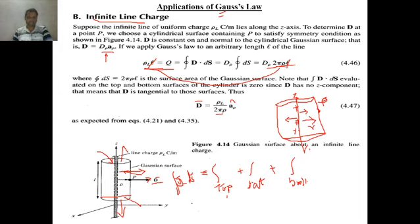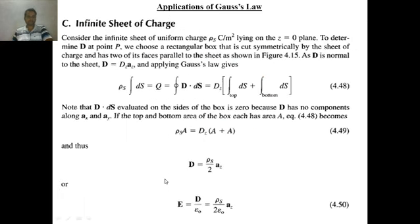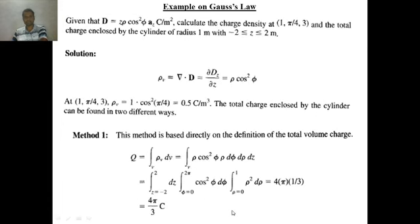Using Gauss's Law for infinite line charge — remember that D-bar is not present on the top or bottom surfaces, only on the lateral surface — the total surface area used is that of the lateral surface only. For an infinite sheet of charge, similarly by using Gauss's Law, it is found that the formula is rho_S divided by (2 epsilon_0) times A_Z-cap.